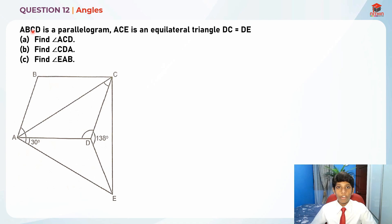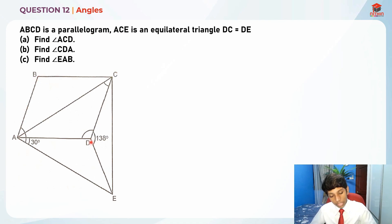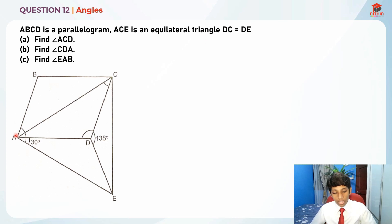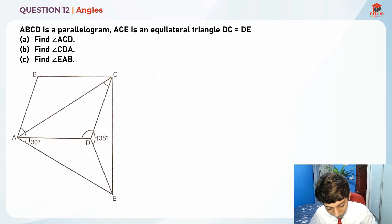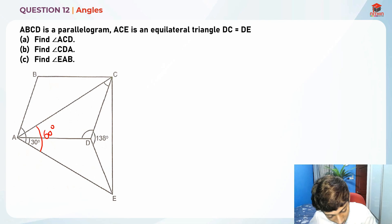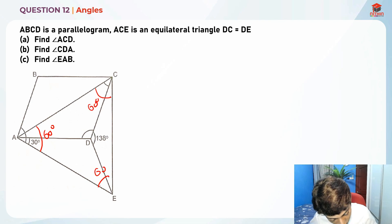Let's read the question and solve Part A first. ABCD is a parallelogram, and ACE is an equilateral triangle. Since ACE is equilateral, all three angles are 60 degrees each — this angle, this angle, and this angle over here.